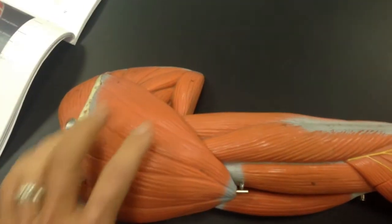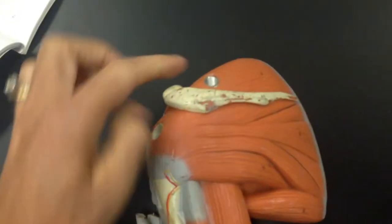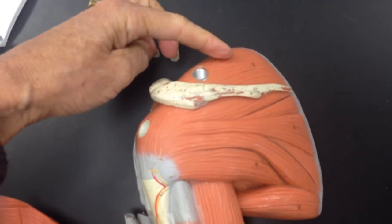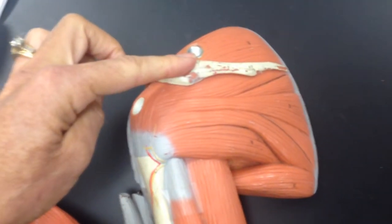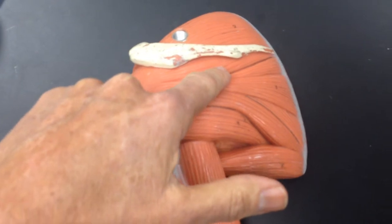Moving on up, over here we have the deltoid. Underneath the deltoid, we have one that's above the spine of the scapula—that's the supraspinatus. Under the spine of the scapula is the infraspinatus.